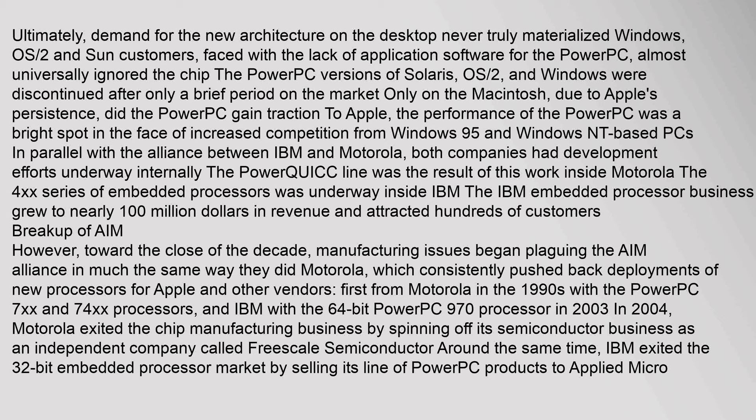In parallel with the alliance between IBM and Motorola, both companies had development efforts underway internally. The PowerQUICC line was the result of this work inside Motorola. The 4XX series of embedded processors was underway inside IBM, and the IBM embedded processor business grew to nearly $100 million in revenue and attracted hundreds of customers.